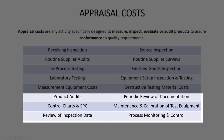From a quality management side, appraisal includes things like product audits, control charts and SPC, reviewing inspection data, the periodic review of documentation, maintenance and calibration of test equipment, and any sort of process control and monitoring activities.